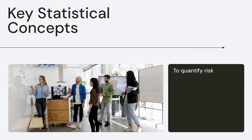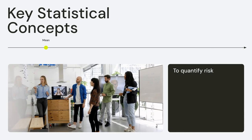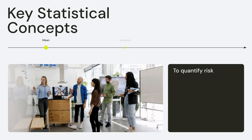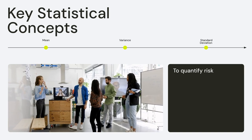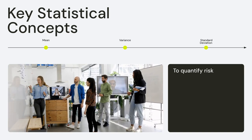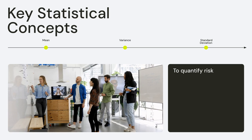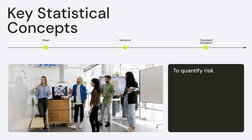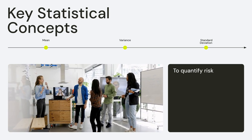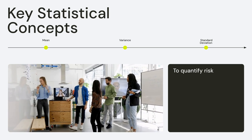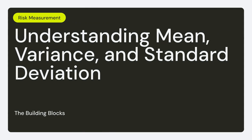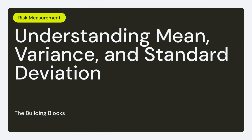To quantify risk, we use key statistical measures: mean, variance, and standard deviation. These terms might sound complex, but they're essential for assessing financial risks. The mean is simply the average return. Variance shows how much the returns vary from the average, and standard deviation gives us a sense of the volatility or risk involved.